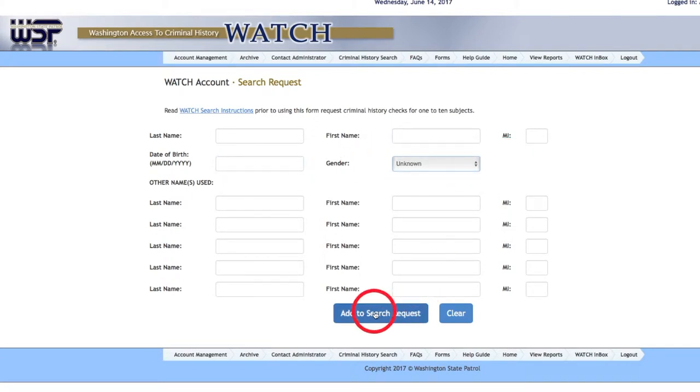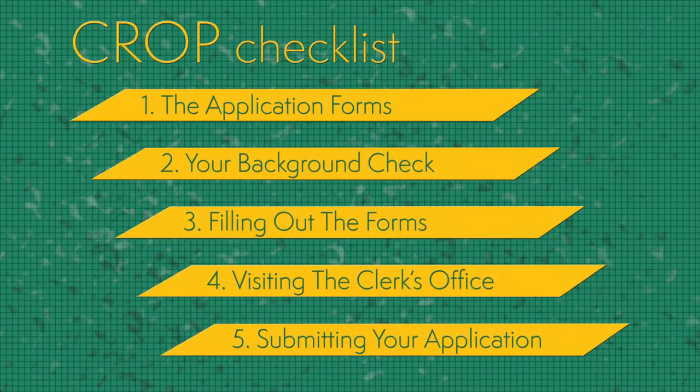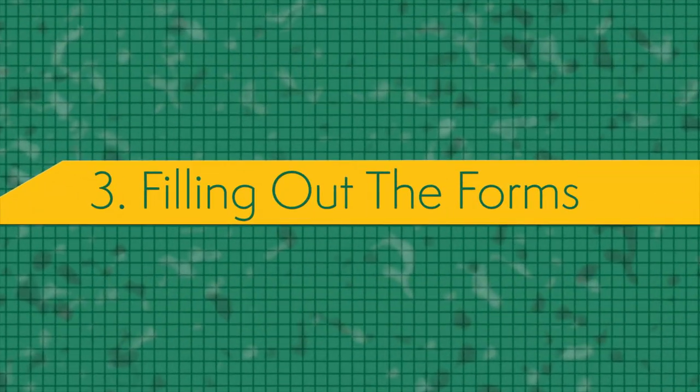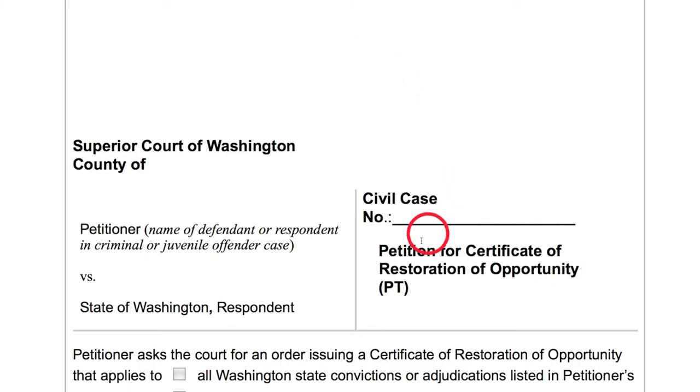Print a copy for your application packet to help you complete step number three: filling out the court forms. The forms themselves aren't too complicated, but there are a few important decisions you'll have to make. We'll go through the forms thoroughly to make sure you're putting all the right information in all the right places. Take a look at the first sheet, which should be the petition. The first blank line at the top asks for the county where you're filing your application.